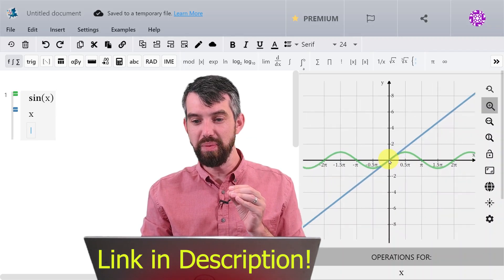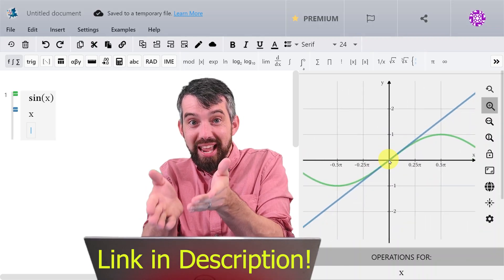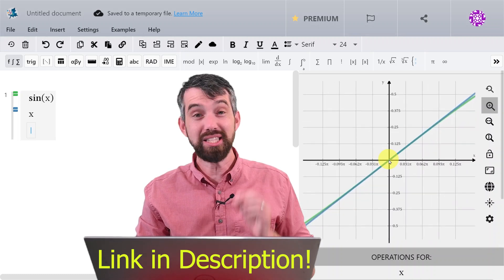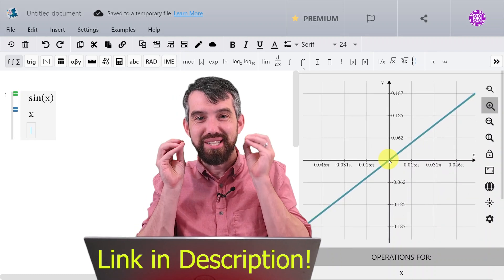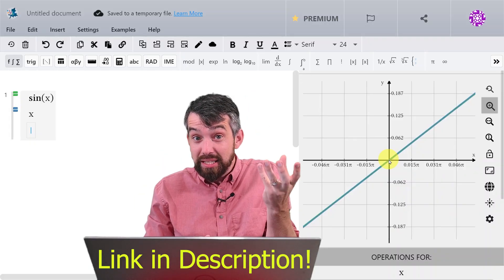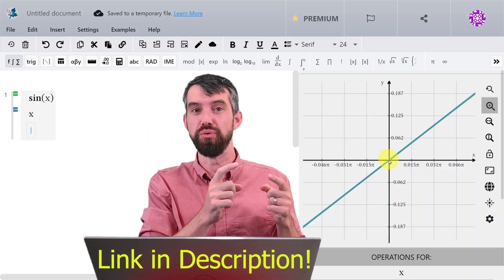I'm just going to keep on zooming, and as you'll notice, the graph of sine of x and the graph of x are getting closer and closer together. If I really zoom in a lot here, at some point you can barely tell that there's a difference between them at all. And this is the sense in which sine of x and x are approximately the same when x is really close to zero.